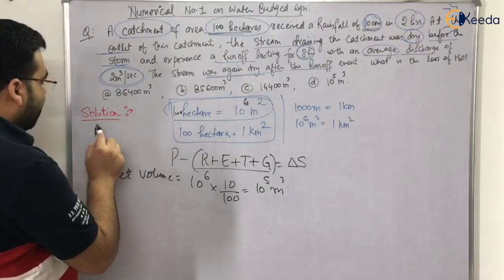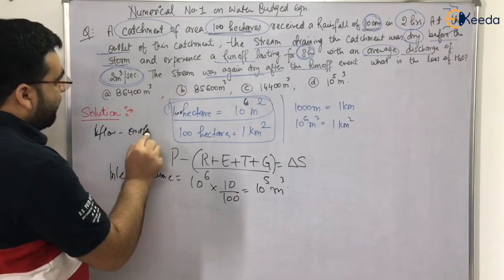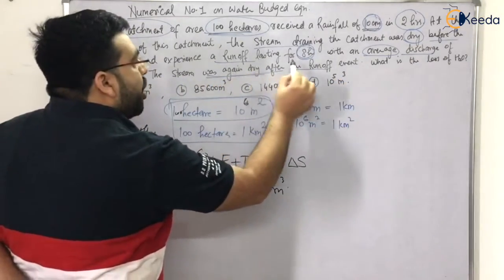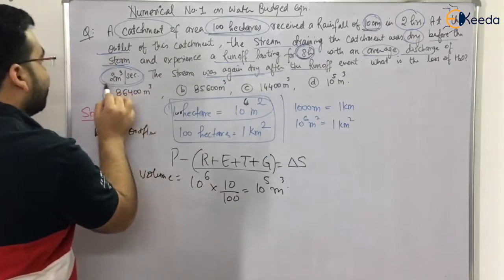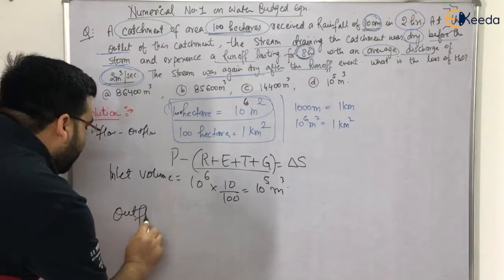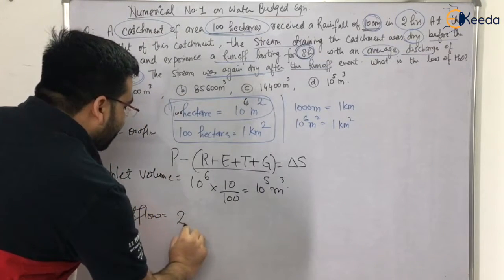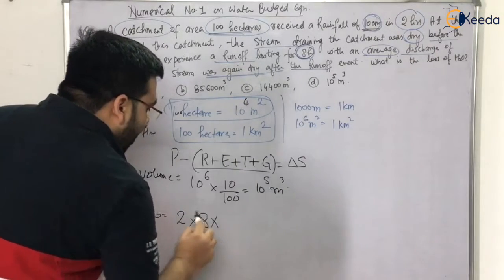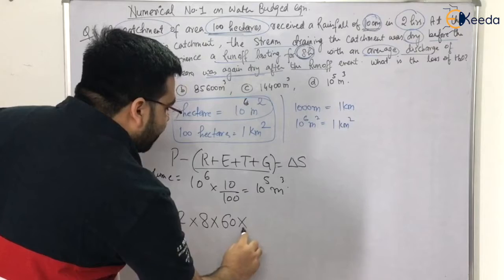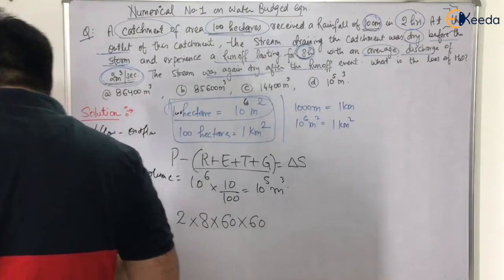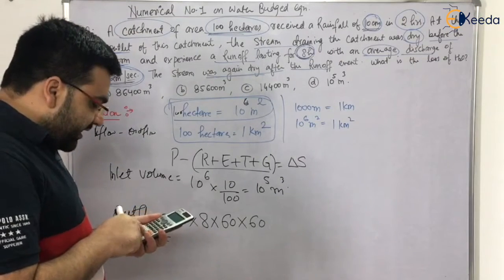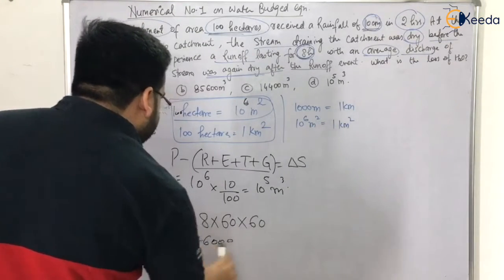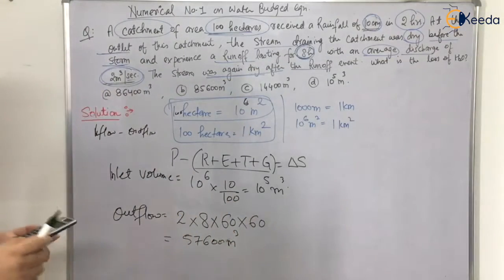Now let me calculate the outflow. Outflow = discharge × time. The runoff lasted 8 hours, so time in seconds = 8 × 60 × 60 = 28,800 s. Using discharge = 0.5 m³/s, outflow = 0.5 × 28,800 = 14,400 m³.